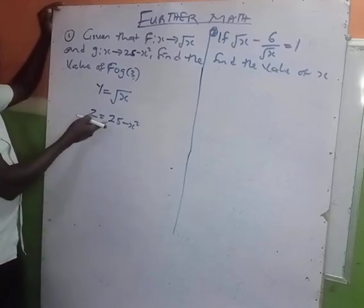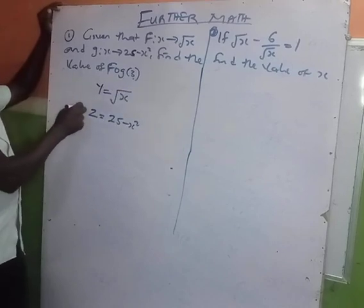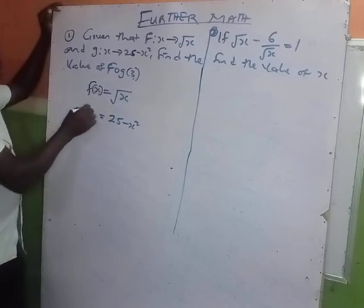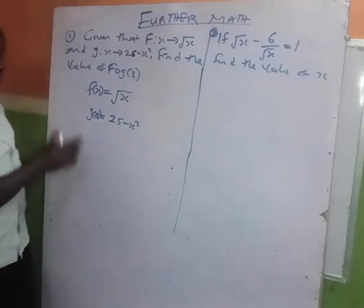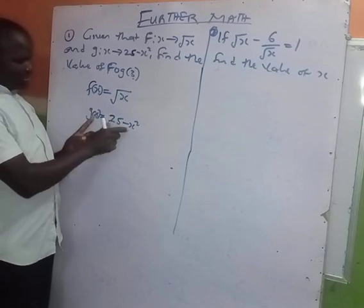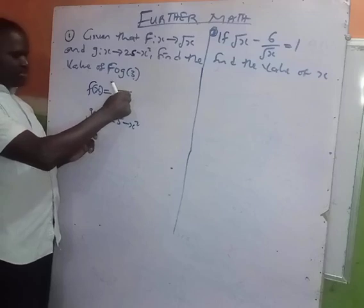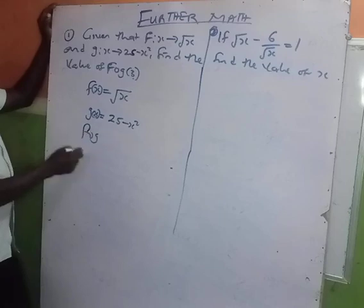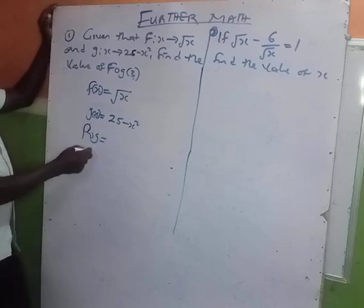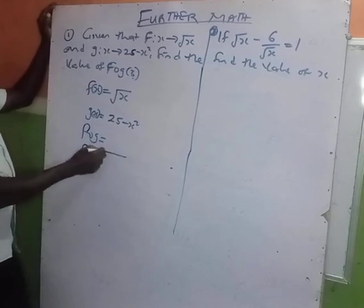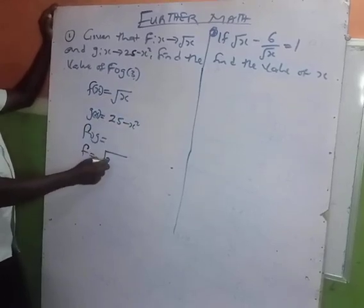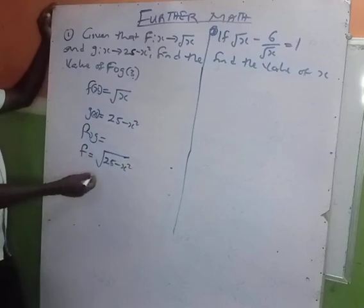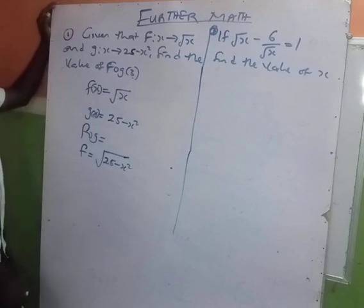What this is saying is that f(x) takes x as input. So what they are saying is that g(x) is inside f, so you can express f(g(x)) as f equal to √(25 - x²). You place the expression for g(x) inside f.